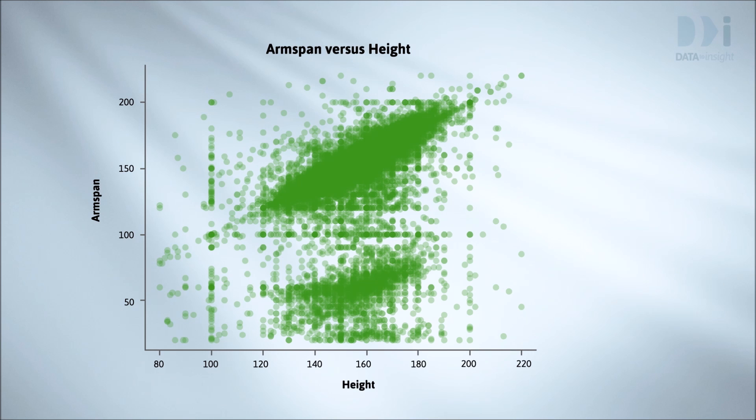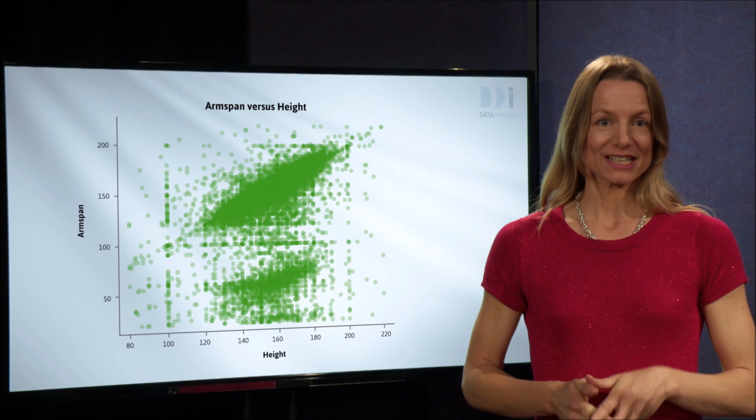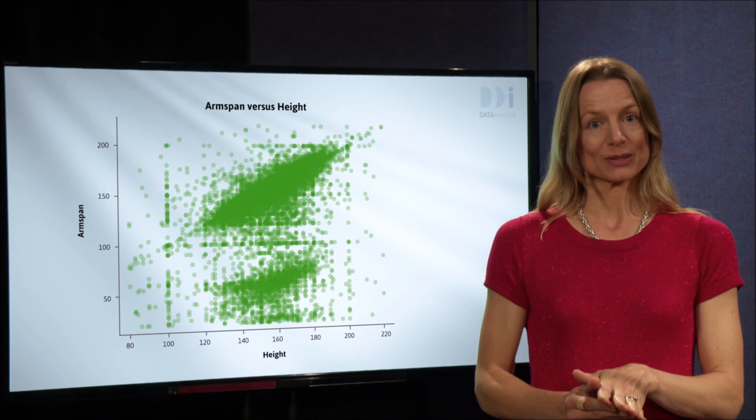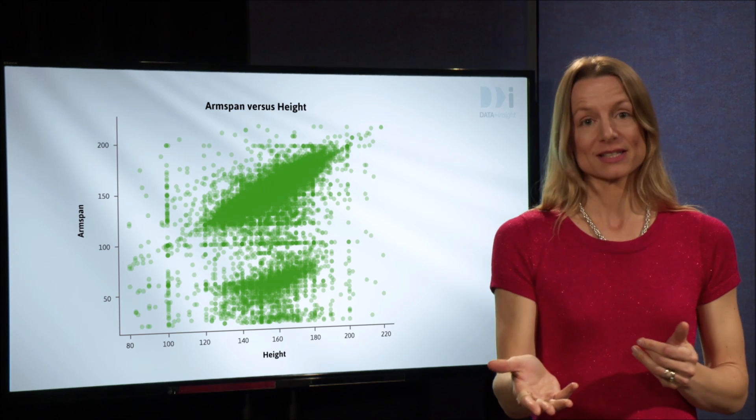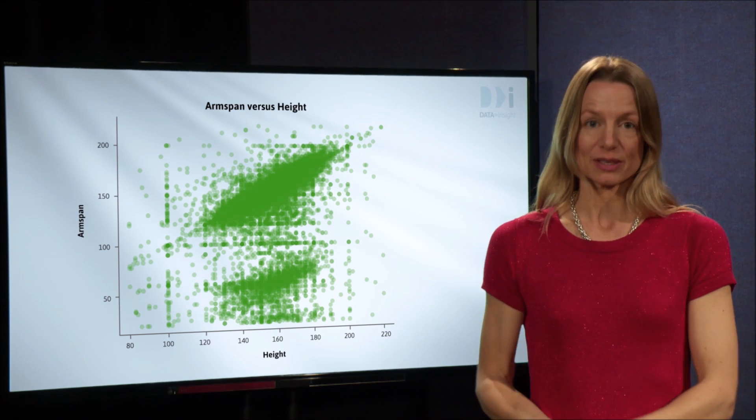Most of these patterns were caused by a bad measurement process that involved kids being kids. We know that there are a lot of things wrong with this data because we know a lot about arm spans, heights, and children. But if we were investigating something we knew almost nothing about, we'd probably have no idea that we were looking at artefacts rather than facts, aspects of the real relationship.